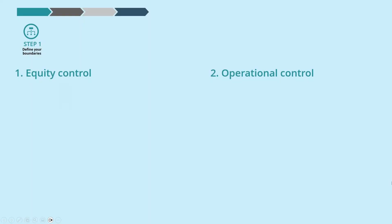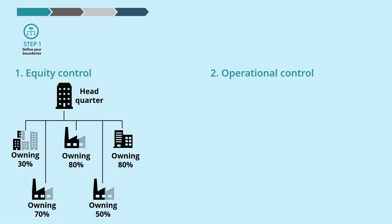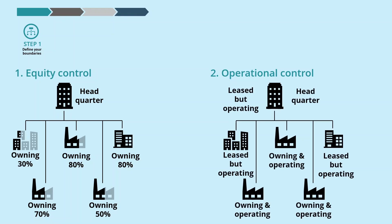If you're asking yourself which one to pick, this really depends on your organizational structure. If you hold many shares of sites, it might be better to go for the equity share. If you don't own many sites but you have operational control — so you know how to heat it, how to use the electricity, how to operate it — then go for operational control. Pick one approach and apply it consistently.